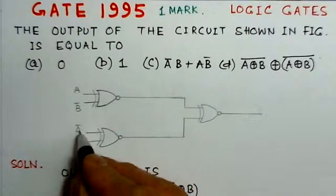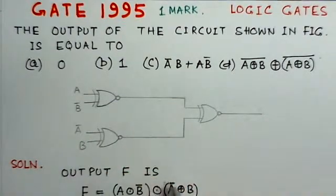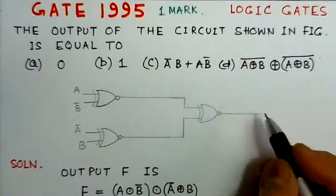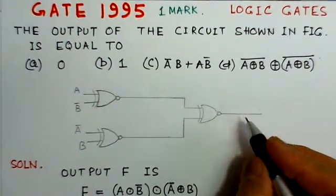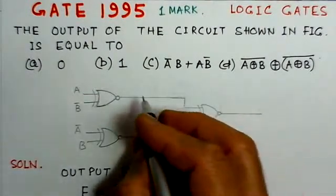At this XNOR gate, this A bar and this is B. These inputs are given and we have to find the corresponding output here and we have to get the output and simplify the output.